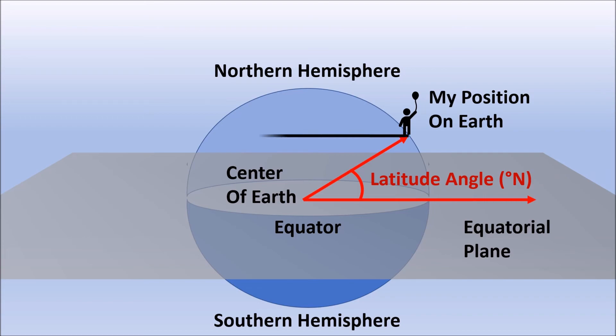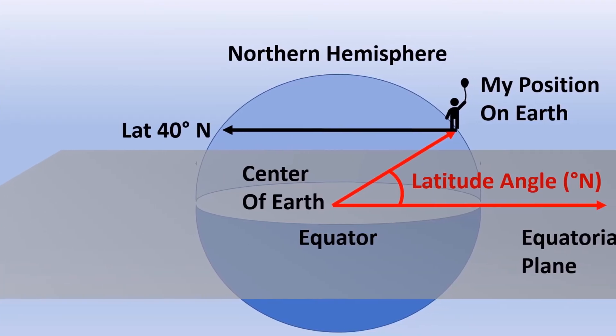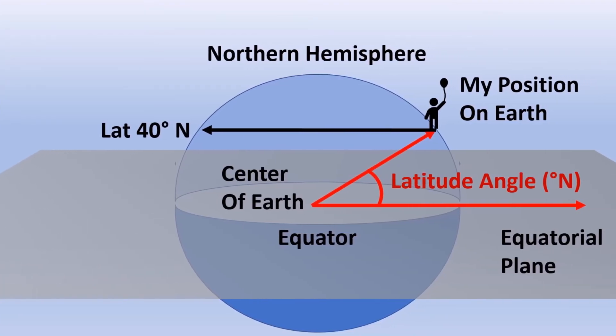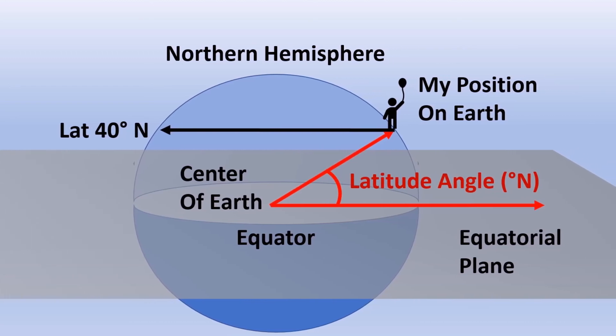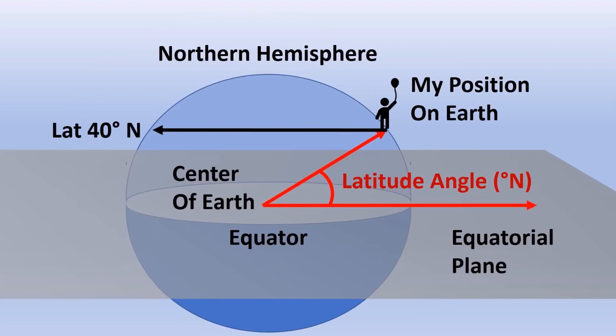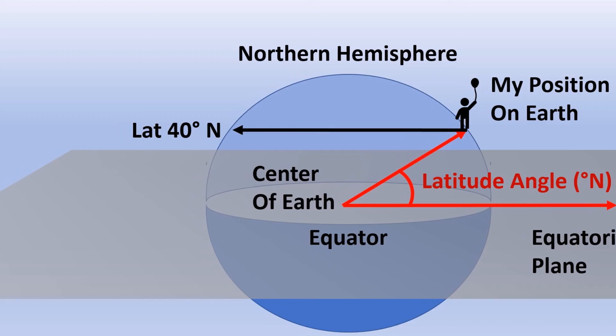And as I am standing on the northern hemisphere, our latitude will be degrees north. So in layman's term, latitude is a vertical angle measured from the center of earth above or below equatorial plane to a point of interest or, in this case, my position.